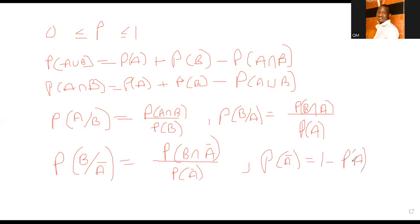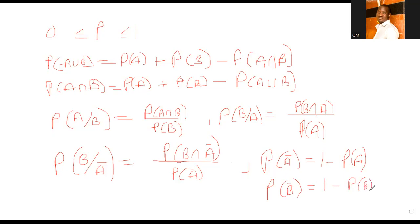A complement is simply one minus the probability of A. What do I mean by 'outside'? If A is 20 percent, what is remaining? That remaining percent is what we call the complement. If B is 10 percent, the complement of B is one minus 0.10, which gives us 90 percent or 0.9.